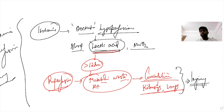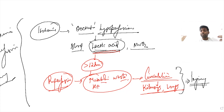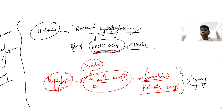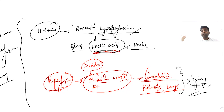To prevent ischemic reperfusion injury, we should have a high index of clinical suspicion, identify the patient in the stage of occult hypoperfusion by checking lactic acid levels, and intervene before 12 hours of ischemia. In that case, we can prevent the damage of reperfusion to the patient. This concept of ischemic reperfusion injury is very important.